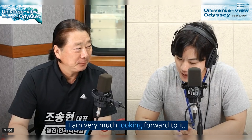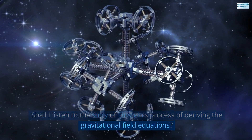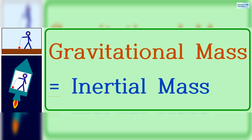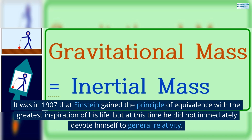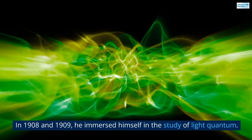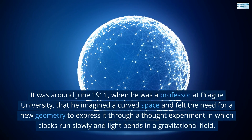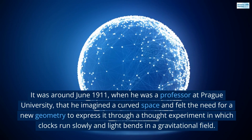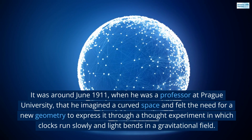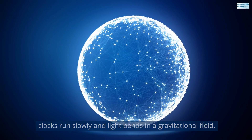Q2. I am very much looking forward to it. Shall I listen to the story of Einstein's process of deriving the gravitational field equations? It was in 1907 that Einstein gained the principle of equivalence with the greatest inspiration of his life, but at this time he did not immediately devote himself to general relativity. In 1908 and 1909, he immersed himself in the study of light quantum. It was around June 1911, when he was a professor at Prague University, that he imagined a curved space and felt the need for a new geometry through a thought experiment in which clocks run slowly and light bends in a gravitational field.